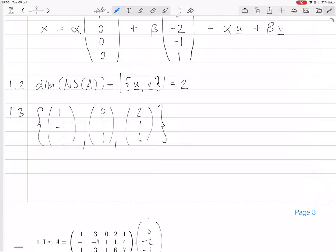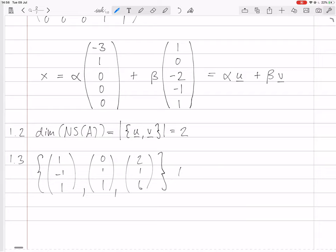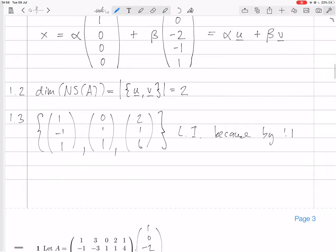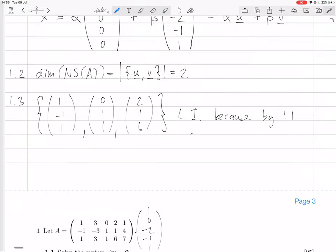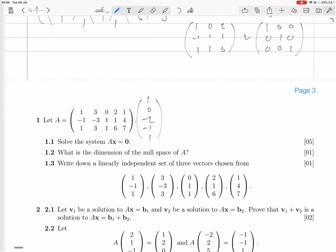So these are linearly independent. Why? Because by 1.1, we know that if you put those vectors into a matrix, you Gauss-reduce it, and you'd get the identity matrix. So that's question one done.